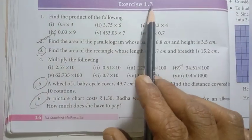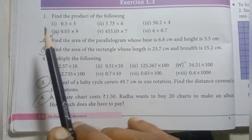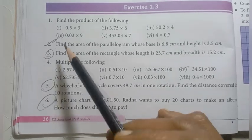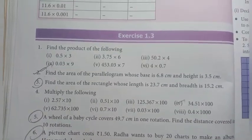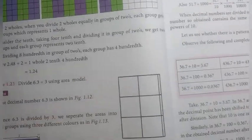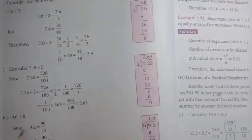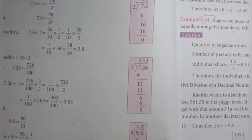Exercise 1.3: second one is previous year; 3rd, 5th, and 6th are important questions. Objective type questions — you can work out. Next, page number 21.